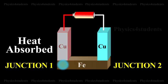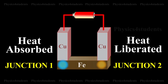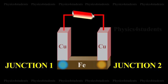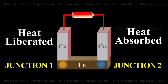And at junction 2, where the current flows from iron to copper, heat is liberated, so it gets heated. When the direction of the current is reversed, junction 1 gets heated and junction 2 gets cooled. Hence, Peltier Effect is reversible.